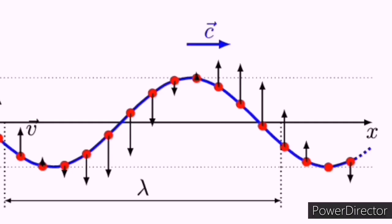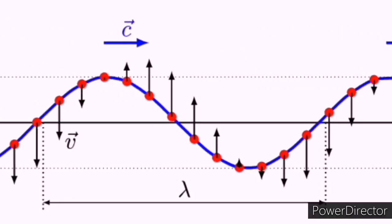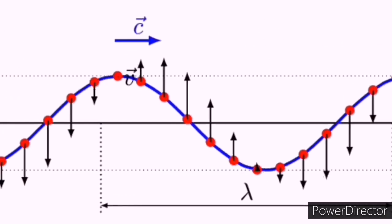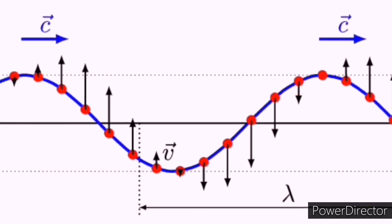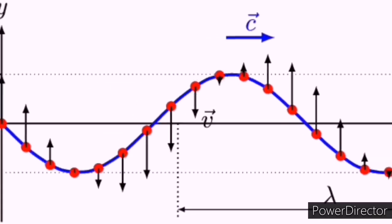The corresponding wavelengths of sound waves range from 17 m to 17 mm. The speed of sound depends on the medium the waves pass through and is a fundamental property of the material.